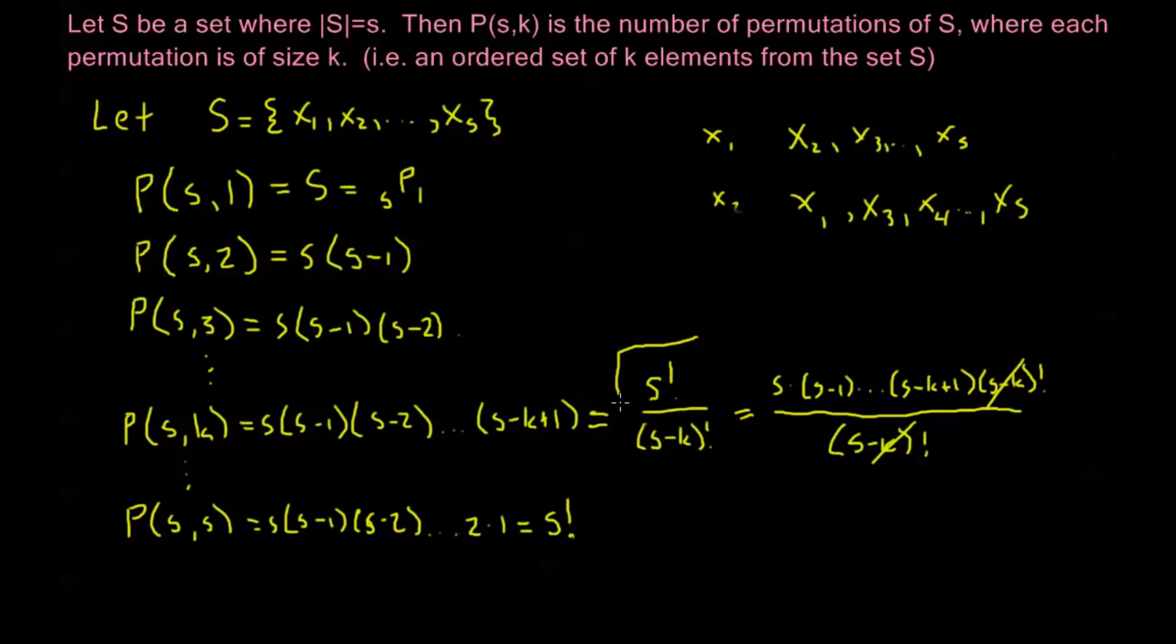So this right here, this is going to be the formula in general you're going to want to remember for P(s,k), or the permutation function. In a set of size s, this value is going to be all the possible ways that you can order k different elements from the set S. And those aren't the same elements, of course. If you take any k elements and arrange them, that arrangement is included. It's counted by this function.